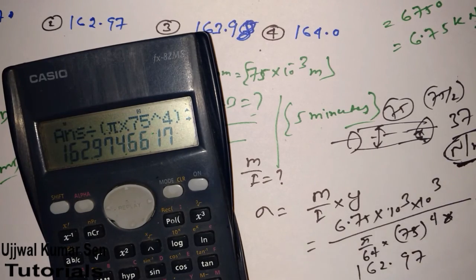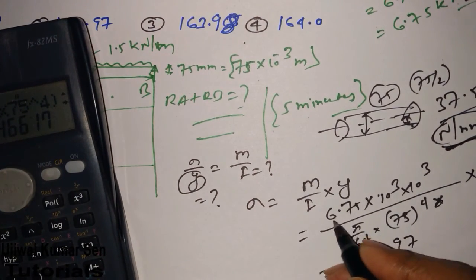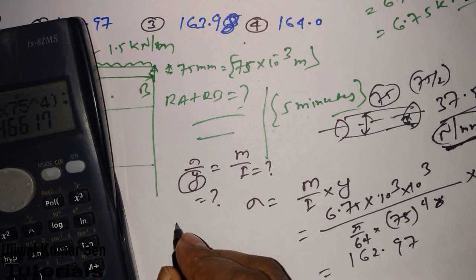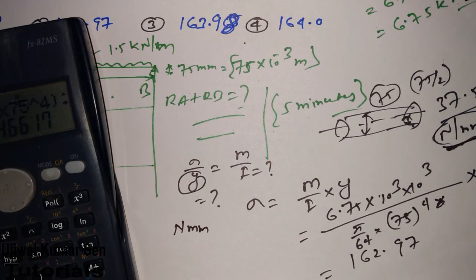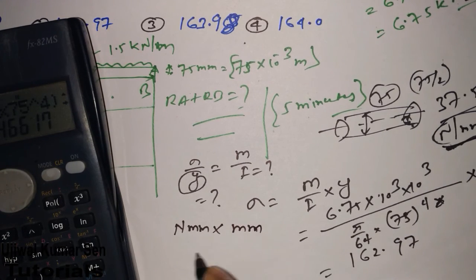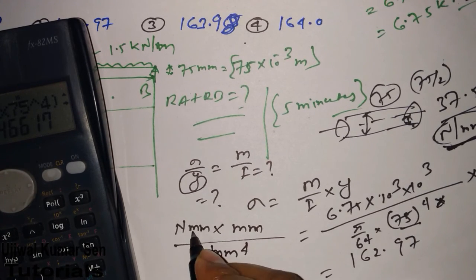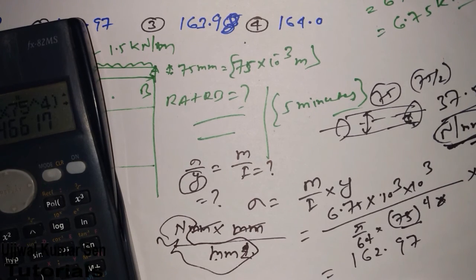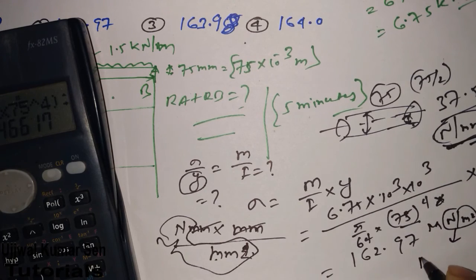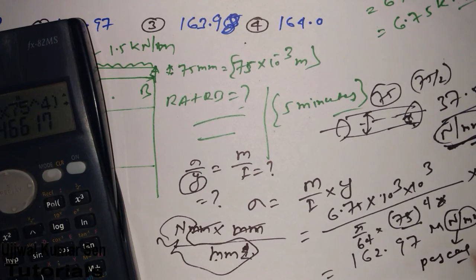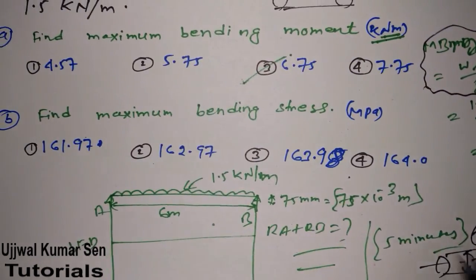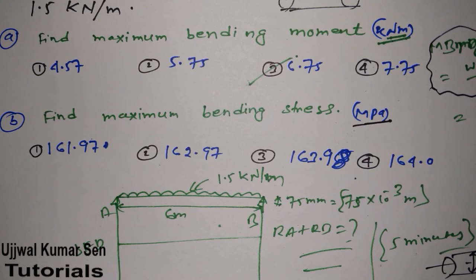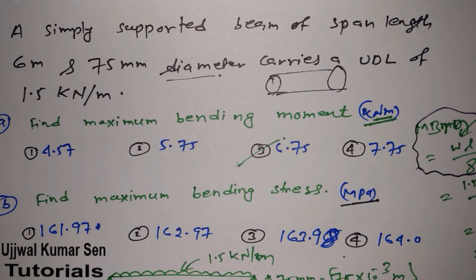The unit check: maximum bending moment was in N·m, converted to N·mm; y is in mm; and I is in mm⁴. So the mm units cancel leaving N/mm², which is megapascal. Megapascal means meganewton per meter squared, since newton per meter squared is pascal. Looking at the options, option 2 is the right answer for this question.